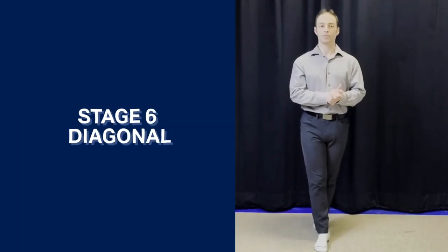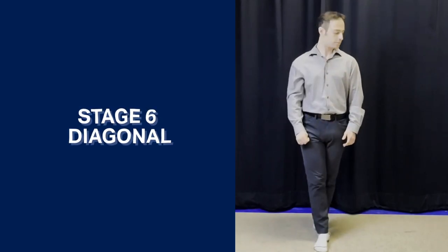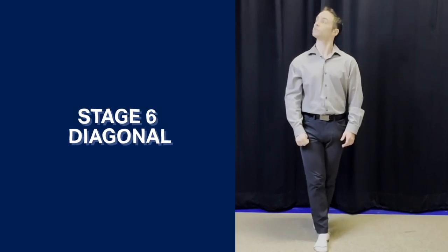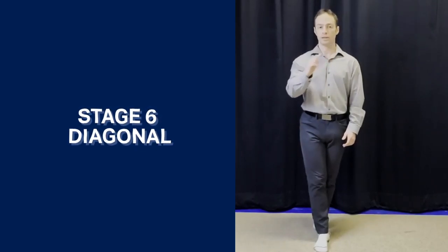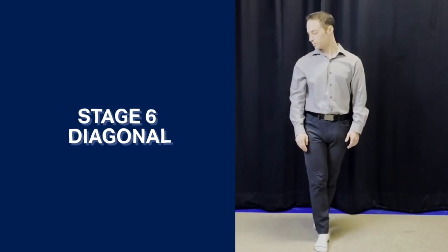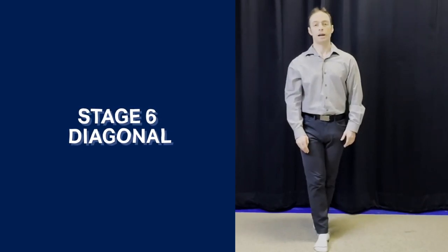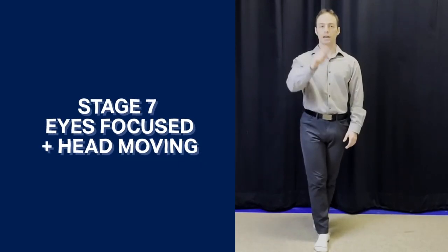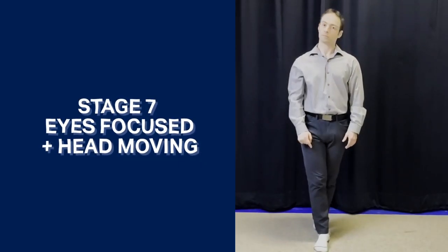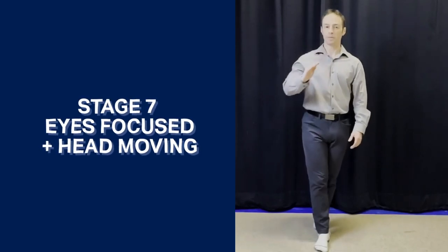Progression six, diagonal. You're going to move your head from bottom left to top right, like so. Then you're going to do the same thing in the other diagonal, bottom right to top left, like so. The last progression is you're going to keep your eyes focused and the head moving, like so. And the same thing with the other diagonal.